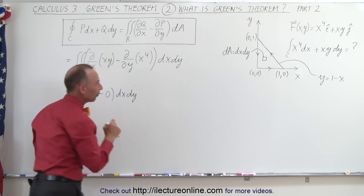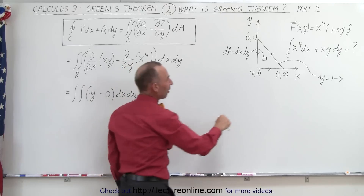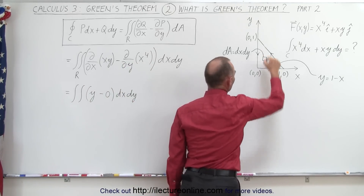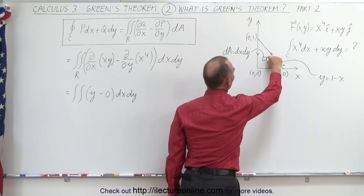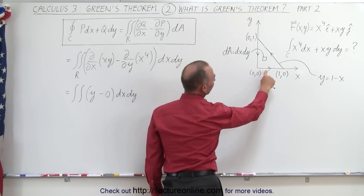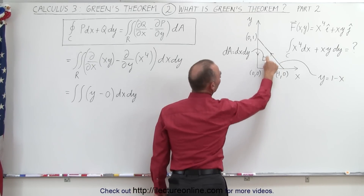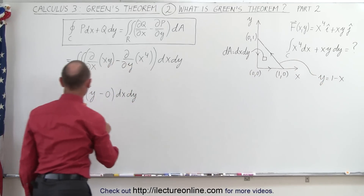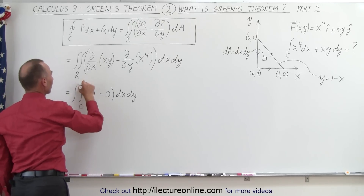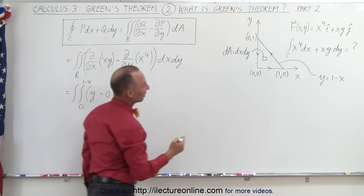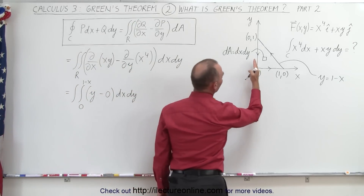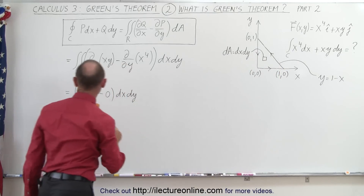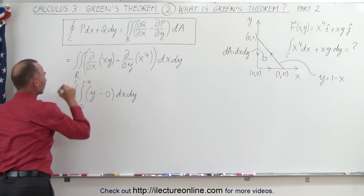Let's first integrate in the y direction. The dy limits of integration go from 0 to y, where y equals 1 minus x. So the first limit is from 0 to 1 minus x, and then the second limit goes from left to right in the x direction, from 0 all the way to 1.